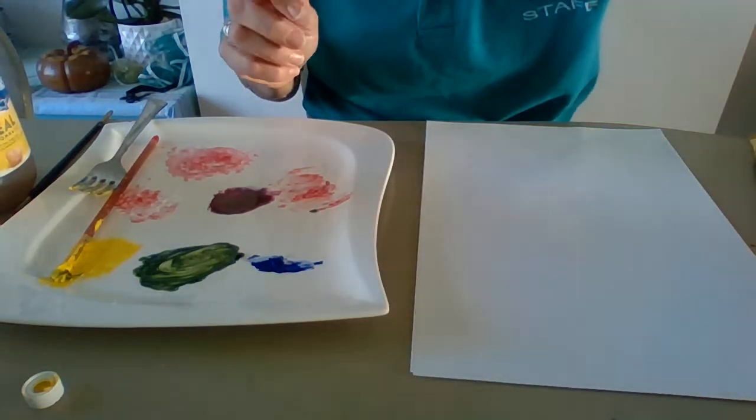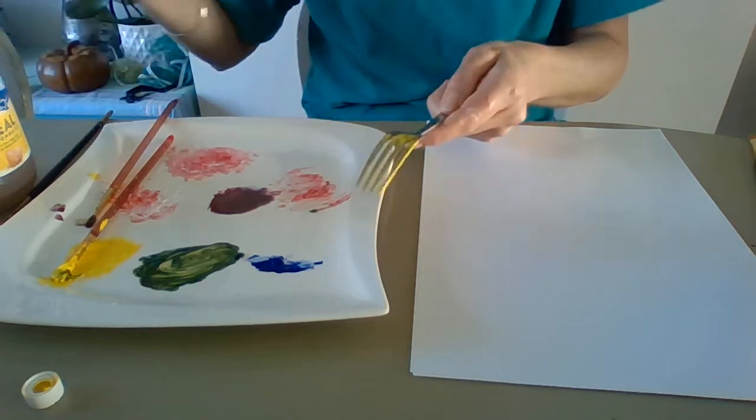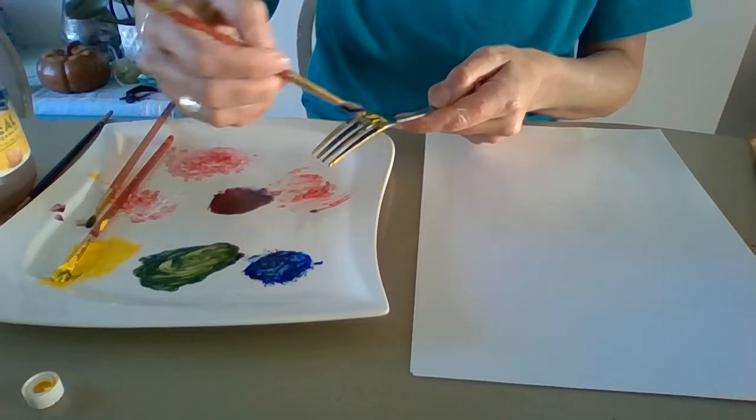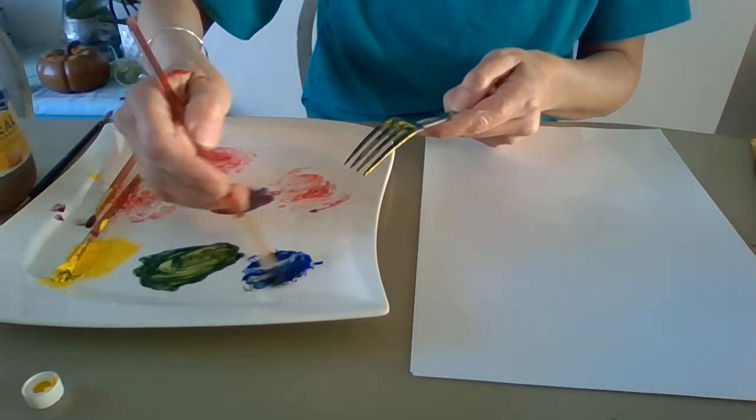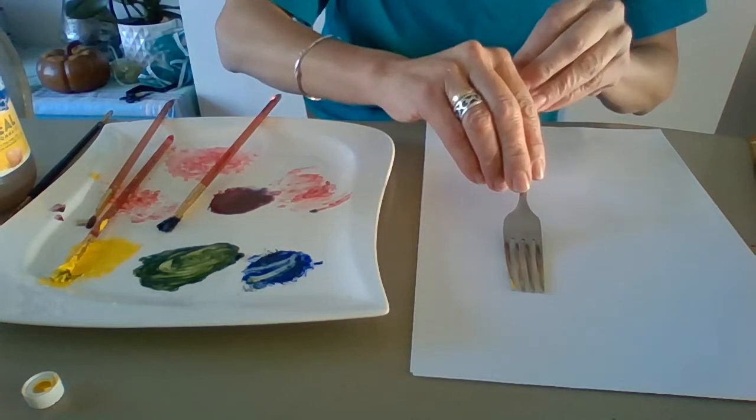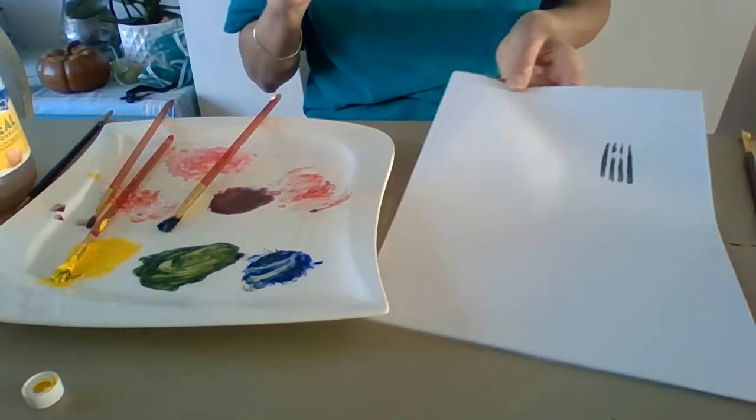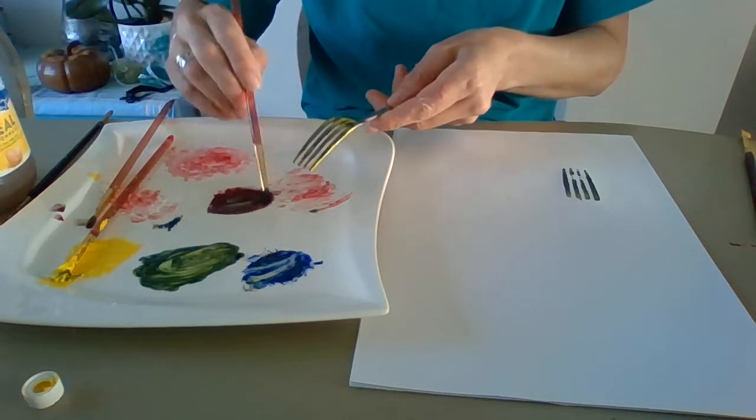What I could do is use my fork technique. I'm going to put some blue on this time to make a flower that looks a bit like a tulip. And I'm going to press it like this. Turn it that way up, you can see. I think I'm going to do a purple one as well.